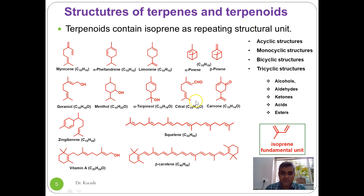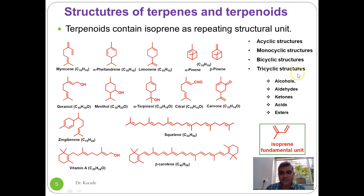As far as the structures of terpenes are concerned, they can be acyclic — like myrcene, geraniol, and citral — or monocyclic — like phellandrene, limonene, menthol, and alpha-terpineol. In the bicyclic variety we have alpha-pinene and beta-pinene. Tricyclic structures also exist, like santonin, which is a sesqui-terpenoid with a tricyclic structure. So terpenoids can have acyclic, monocyclic, bicyclic, and tricyclic structures.